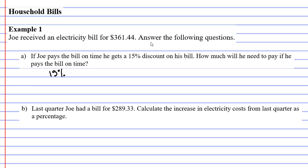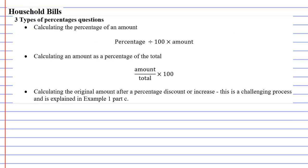We need to calculate what is 15% of $361.44 because that's the discount he's going to be given. When we look at the three types of percentage questions, this is the first one: calculating the percentage of an amount. And here's our formula.